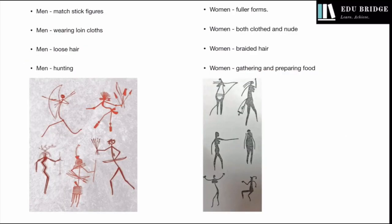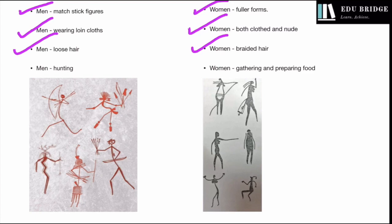The way that women and men were depicted was also very different. Men have been shown as matchstick figures while women have been shown with fuller forms. Men have been shown wearing loin cloths only, whereas women have been shown both clothed and in the nude. Men have been shown with loose hair while women have been shown with braided hair. Men are mostly shown hunting while women have been shown gathering and preparing food, which probably points towards a division of labour based on gender.